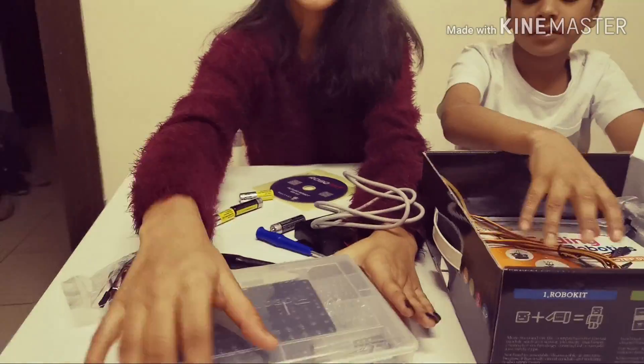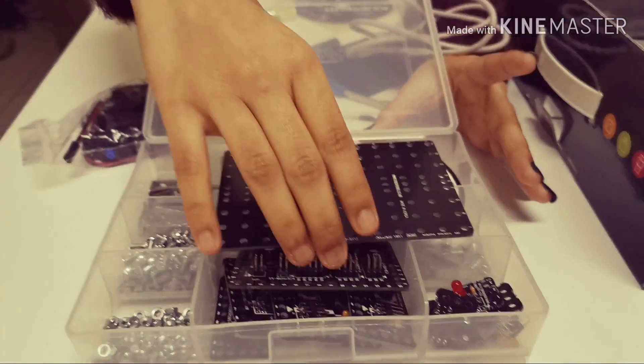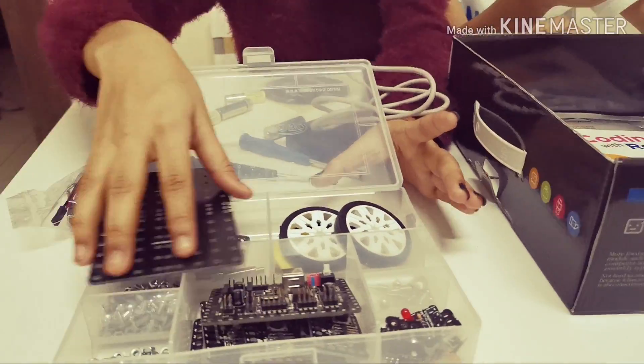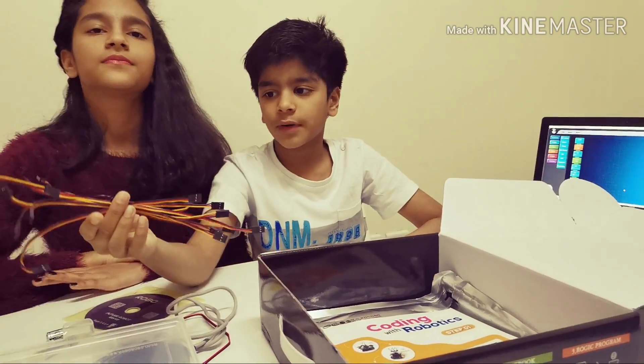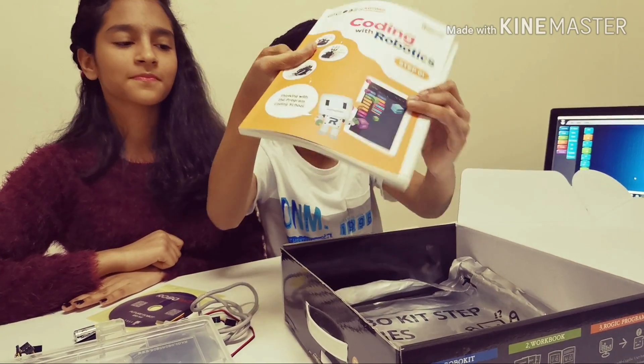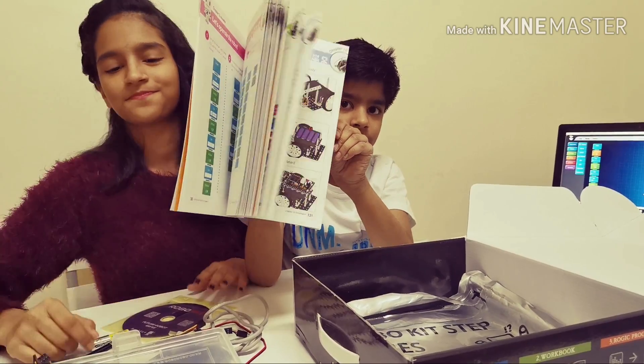And we have the kit in which we have all the parts to make the robot. And these are wires, connecting wires. And this is a manual. It shows us how to make the robots. Let's get started.